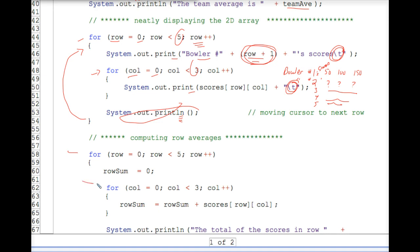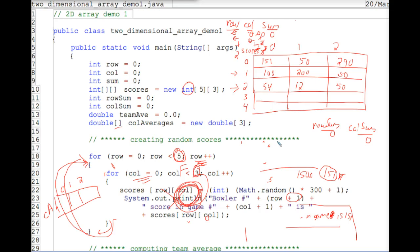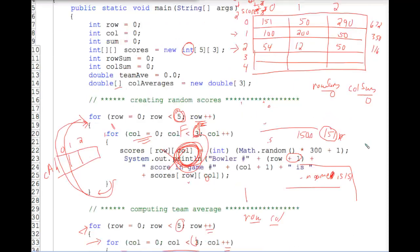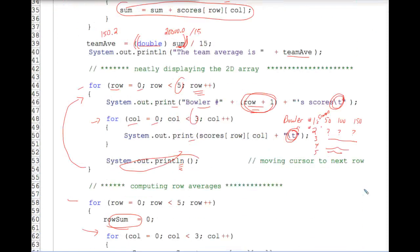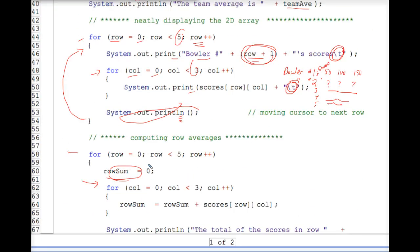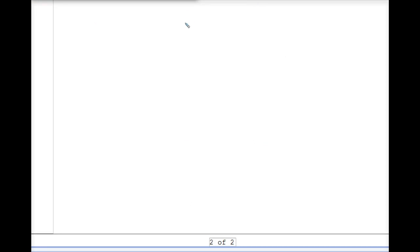That will make it look nice and neat on the output window. So this section of the demo program, again, we're using the double nested for loop. We're resetting our row sum. And because of the way this code works, we will be adding up the three numbers in each row. Let's just pretend that this is 672. Let's pretend that these three numbers add up to 350. Let's pretend that these three numbers add up to 116. And so on. So check it out if you want to type it into a compiler. But, or just trust me, this section of the program prints out those averages. Those row sums, I meant to say.